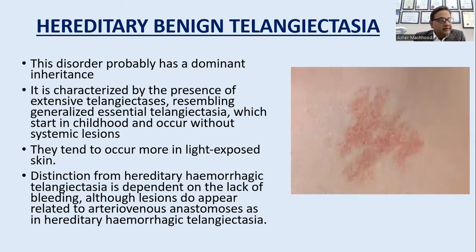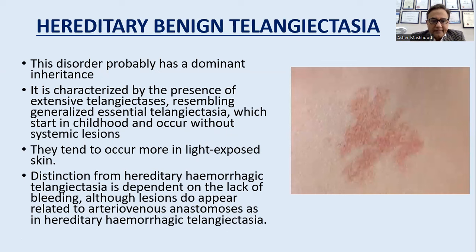Hereditary benign telangiectasias are lighter in color compared to angioma serpigenosum and generalized essential telangiectasias. It has autosomal dominant inheritance, characterized by excessive telangiectasias resembling generalized essential telangiectasias, occurring in childhood and more on light-exposed skin. It is distinguished from hereditary hemorrhagic telangiectasias by the lack of bleeding, although the lesions do appear related to arteriovenous anastomoses as seen in hereditary hemorrhagic telangiectasias.